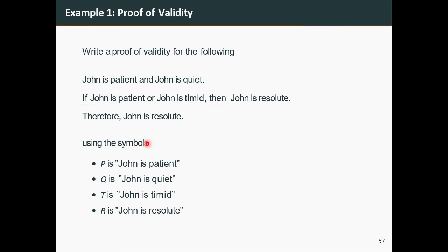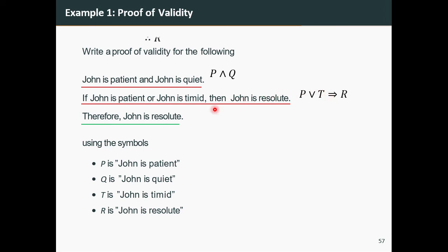We will use symbols: p for John is patient, q for John is quiet, t for John is timid, and r for John is resolute. The premises are p and q, and p or t implies r. The conclusion is therefore r. Now let's begin writing the proof of validity for this argument.